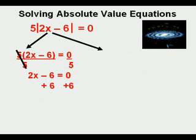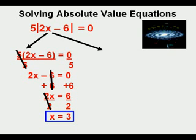We get rid of the negative 6 by adding 6 to both sides and cancel on the left. We bring down what's left, that would be 2x equals 6. We finish solving by dividing both sides by 2, cancel on the left, and bring down the final result, x equals 3.